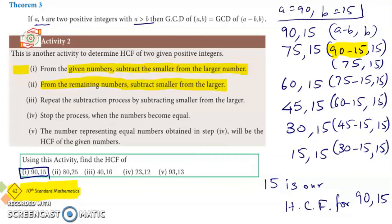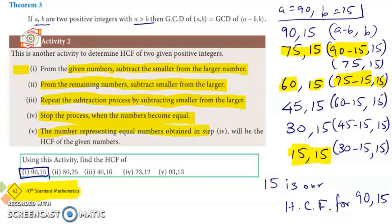Step two says: from the remaining numbers, subtract the smaller from the larger. So the remaining numbers were 4 and 15, and we repeated the same step. Step three says: repeat the subtraction process by subtracting the smaller from the larger. Stop the process when the numbers become equal. The equal number obtained at that step will be the highest common factor of the given numbers. The HCF we got is 15.